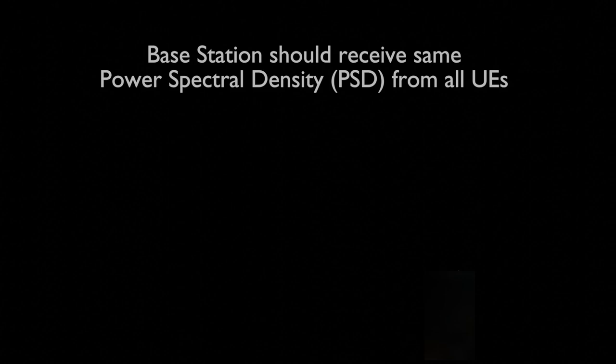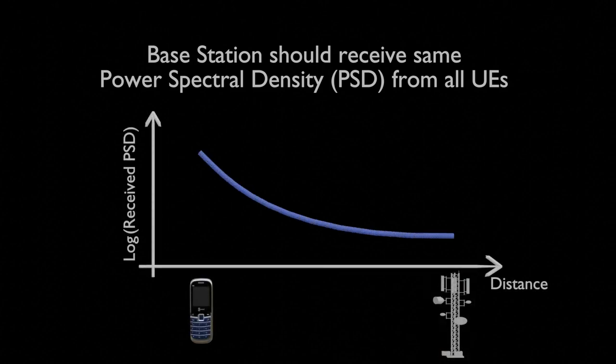The received power by the base station from a UE drops as the distance increases. Simply put, the farther away the UE is, the lower the received PSD, as you can see in this graph.